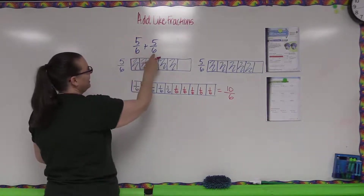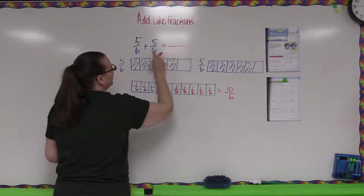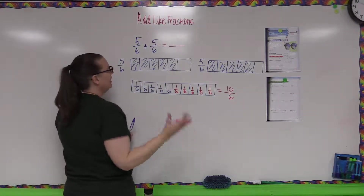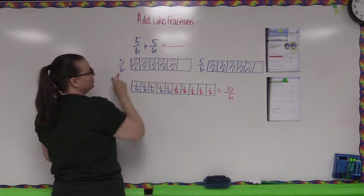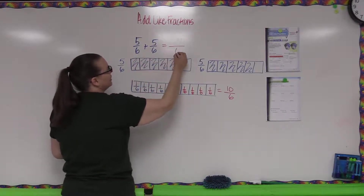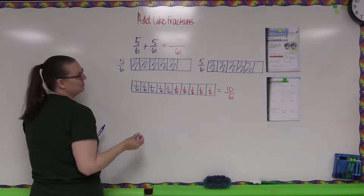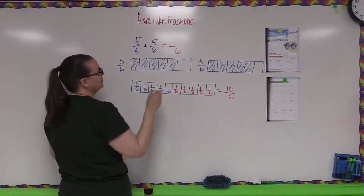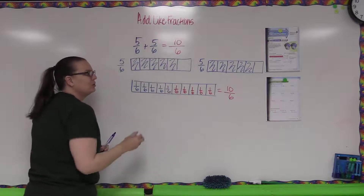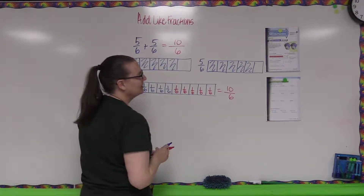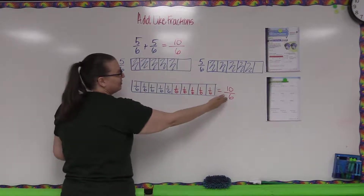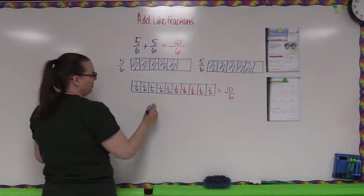Another way is to use the standard method. If the fractions already have a common denominator, don't try to add the denominators together — we're measuring in sixths, so the denominator stays as six. Just add the numerators: five plus five is ten. So we get ten-sixths. Those are two different ways to add like fractions together.